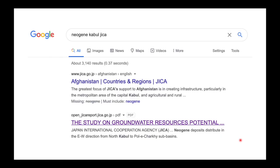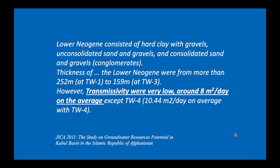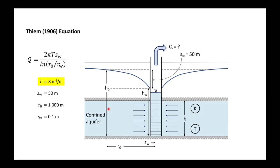Earlier I went to Google and I typed in Neogene, Kabul, JICA. The second hit here is the 2011 JICA study on groundwater resources potential in Kabul basin in the Islamic Republic of Afghanistan. In the executive summary we read that the lower Neogene consists of clay, gravel, sands, gravels and conglomerates. It's pretty thick, 252 meters, 159 meters. However, the transmissivity was very low, only 8 meters squared per day on average. So that's not a lot. Let's plug it into our equation.